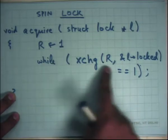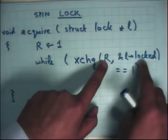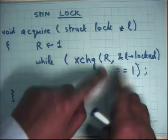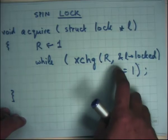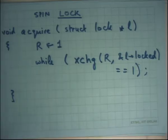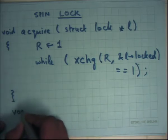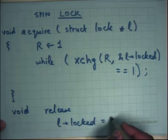If L.locked was 0, R becomes 0 and you exit the loop. If L.locked was 1, R remains 1 and you retry until you see a 0 value. If two threads call exchange simultaneously, one occurs before the other - they cannot interleave - so the swap is atomic. And release is simply: L.locked = 0.